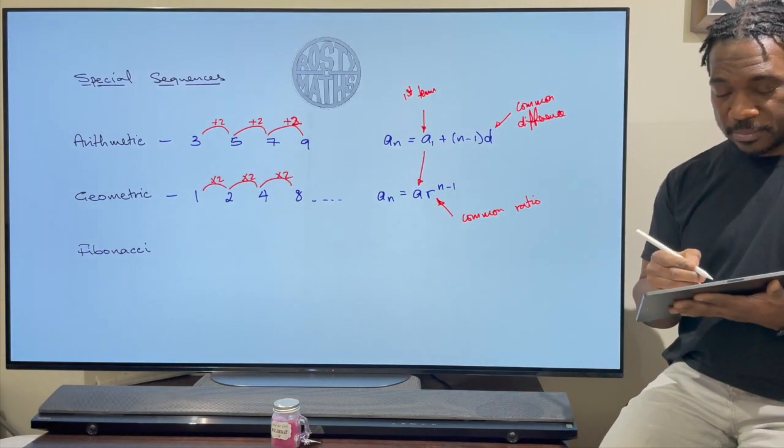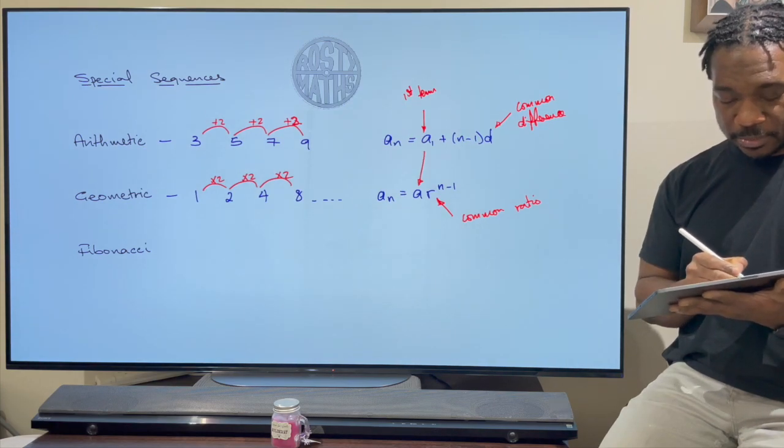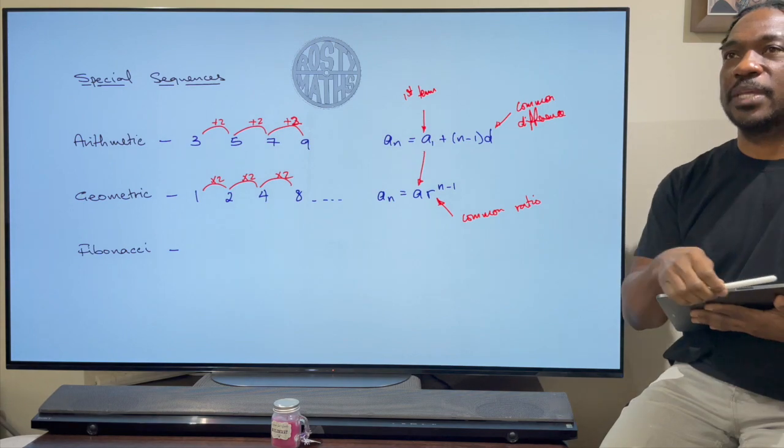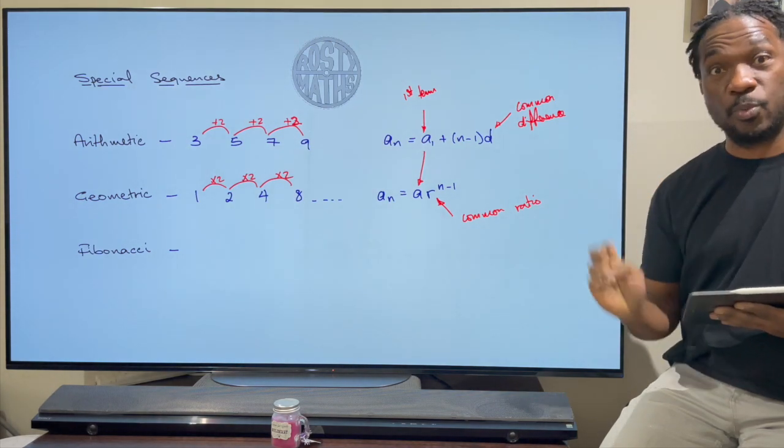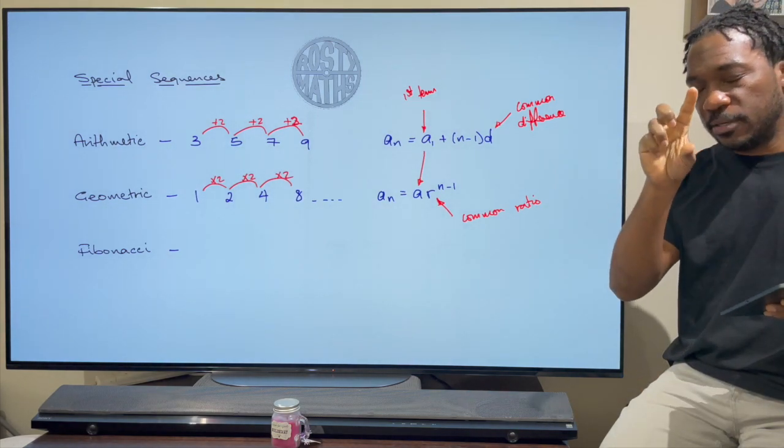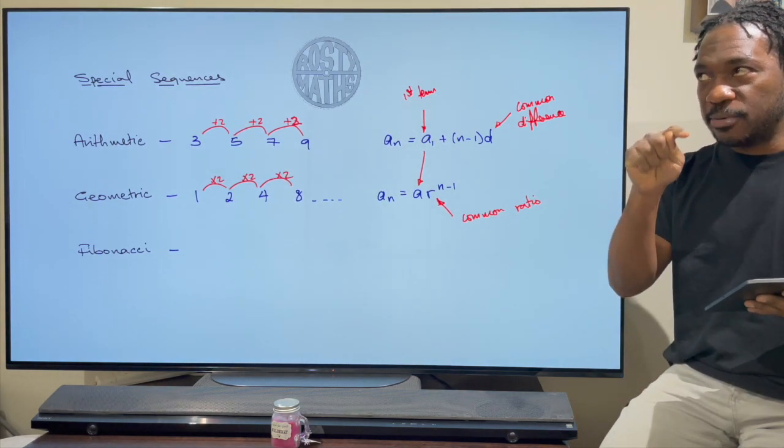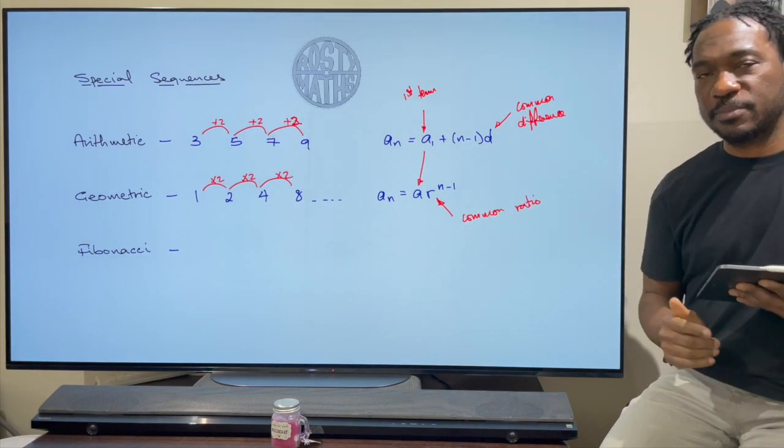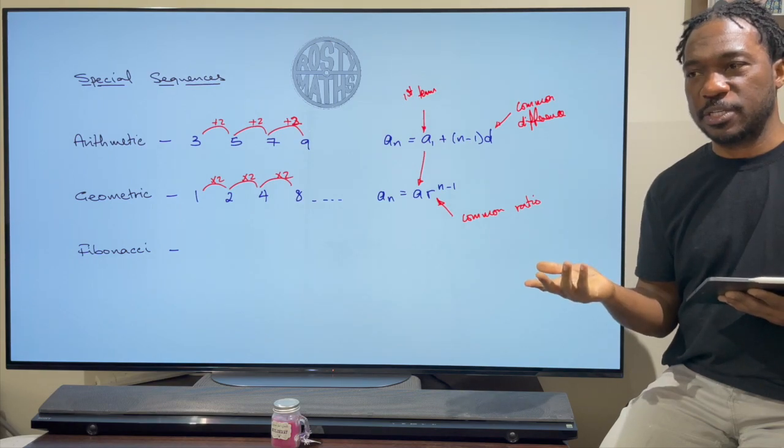The final sequence I'm going to talk about is going to be the Fibonacci sequence. Now this comes from a guy called Fibonacci way back, I can't remember how long now, but he discovered just by looking at shells how the numbers have been incremented to make that shell. I'm not going to attempt to draw one because my drawings are dodgy and I can't show you a picture of one because then I'll have to pinch it off the internet and then that's going to be a copyright problem.